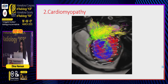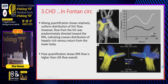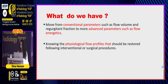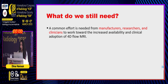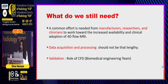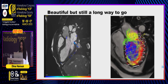For cardiomyopathy applications, four flow components are analyzed: retained flow, residual flow, delayed ejected flow, and direct flow. The residual flow is highest in cardiomyopathy patients. In Fontan circulation, flow directed to the Fontan was going to the RPA. In summary, we get more clinical data from 4D flow with no alteration to blood vessel assessment. We still need more research for faster post-processing, faster acquisition, and validation by medical, legal, and engineering teams. Risk stratification through 4D flow represents personalized medicine — each patient has their own unique flow pattern. Beautiful, but still a long way to go.